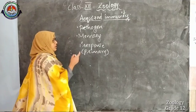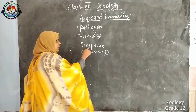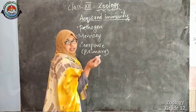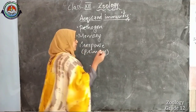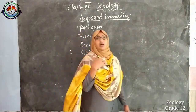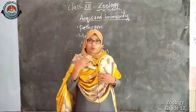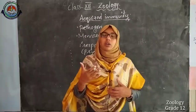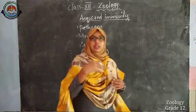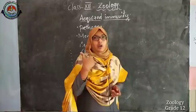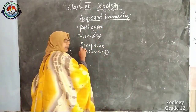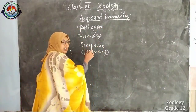For the first time when a pathogen encounters our body, our body produces some sort of response — that constitutes the primary response. For instance, if you are affected with chickenpox virus, our immune system will defend against the disease and we will recover. That response is known as primary response.